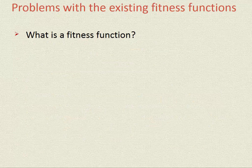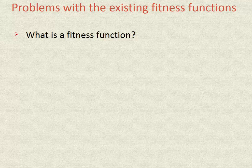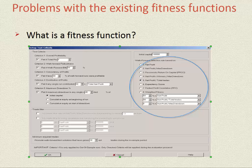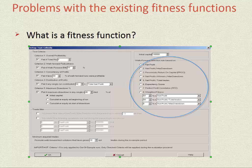Fitness is what you tell the Walk-Forward Optimiser to maximise. The most common fitness is net profit, or net profit over drawdown, or average trade, but there are numerous other fitnesses as well. The results of Walk-Forward Optimisation will vary enormously depending on what fitness you use. One fitness may work well for one type of system, but another system may require a different type of fitness.